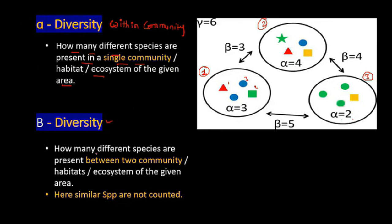Beta diversity means how many different species are present between two communities. Similar species that are common to both communities are not counted. For example, between community 1 and community 2, the blue species is common and is not counted. Only the different species — the yellow square, the green square, and the star — are counted. So beta diversity between these two communities is 3.